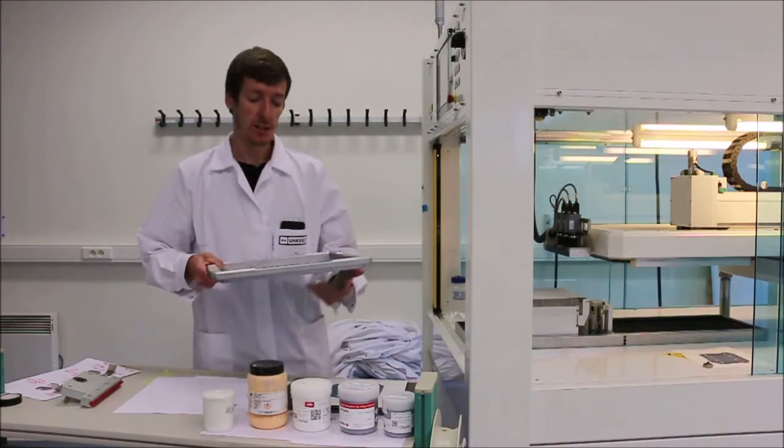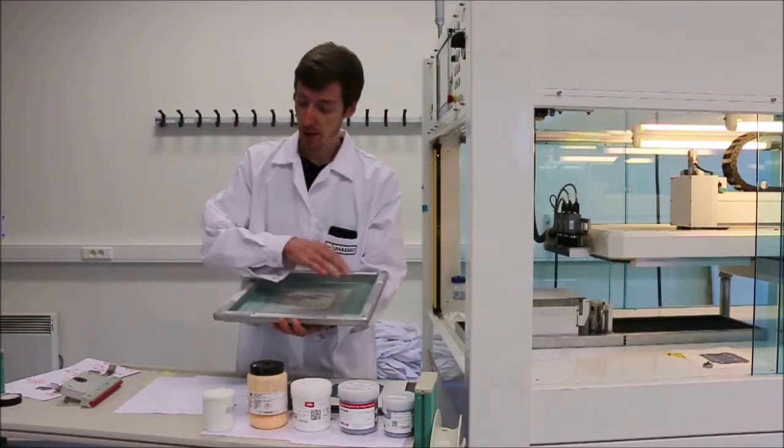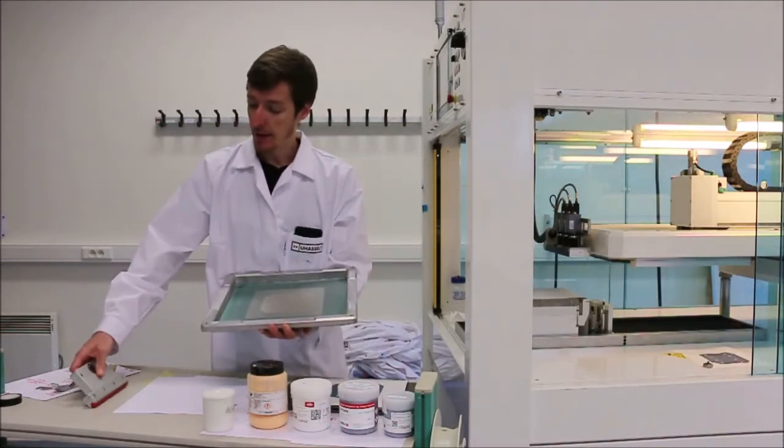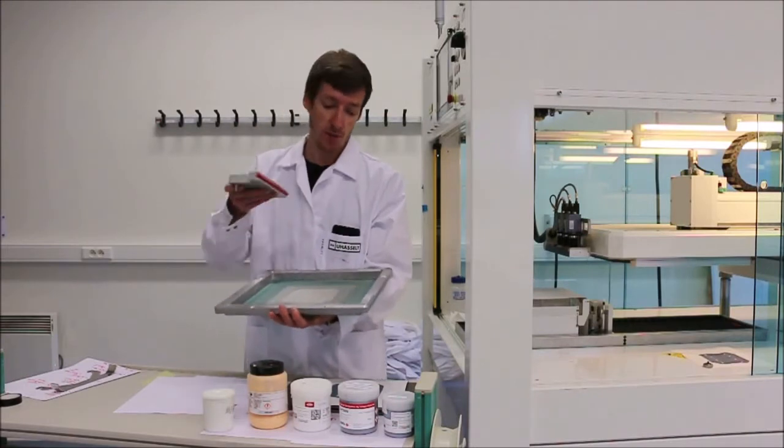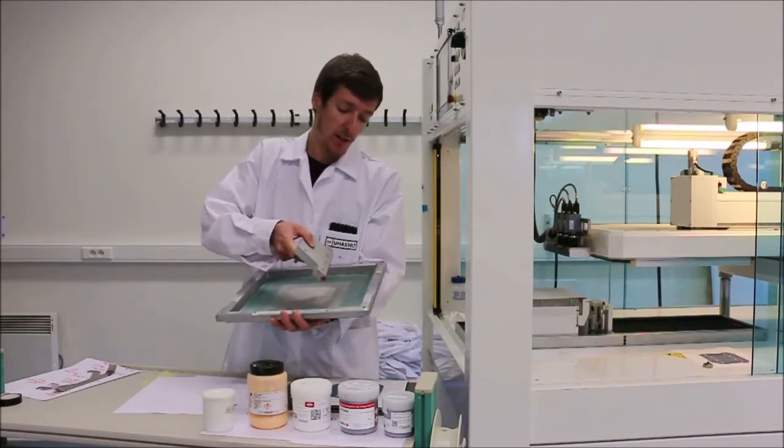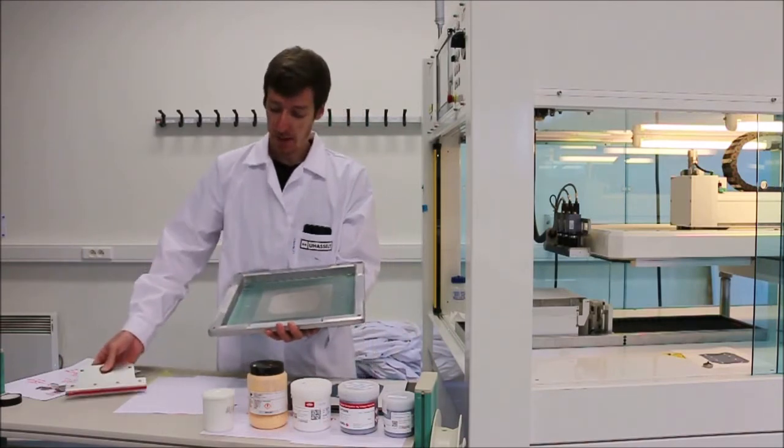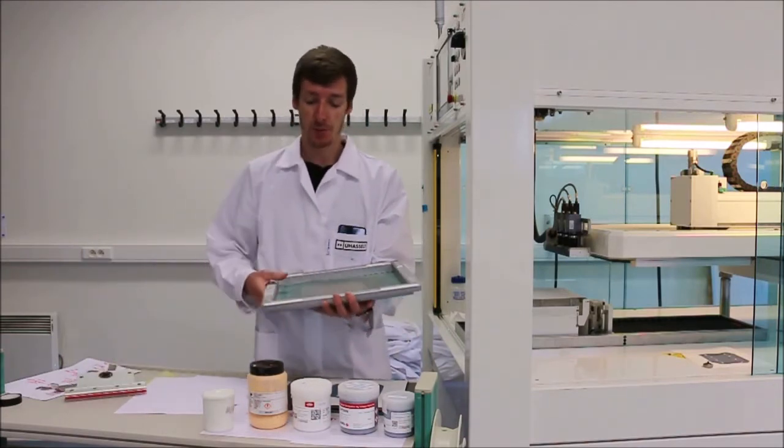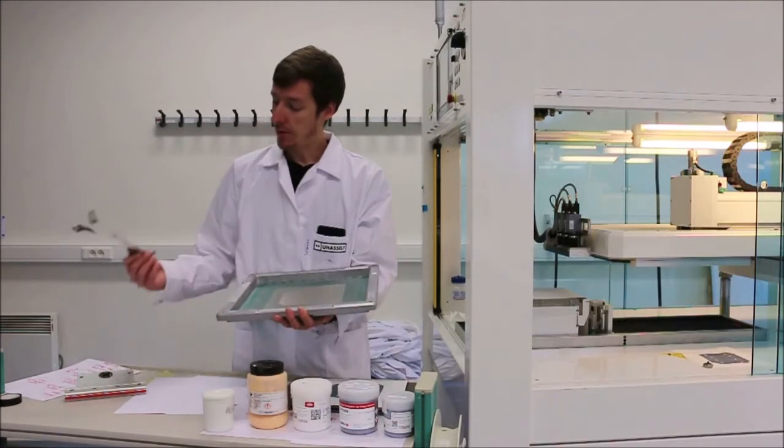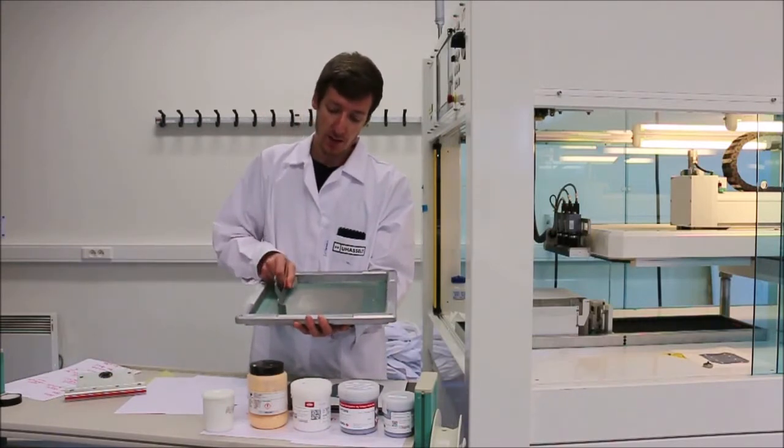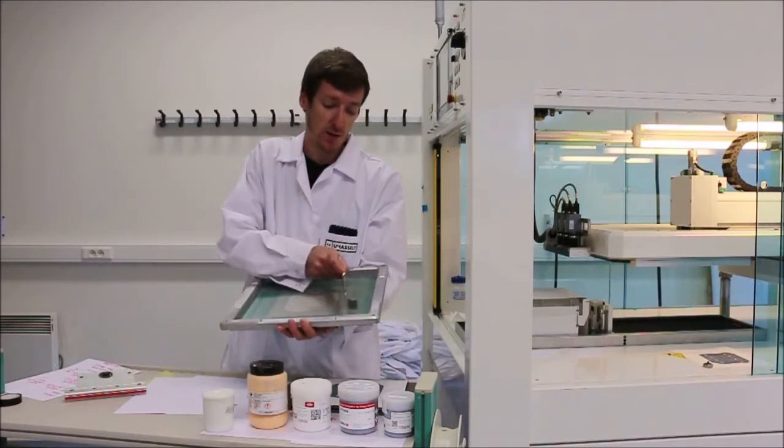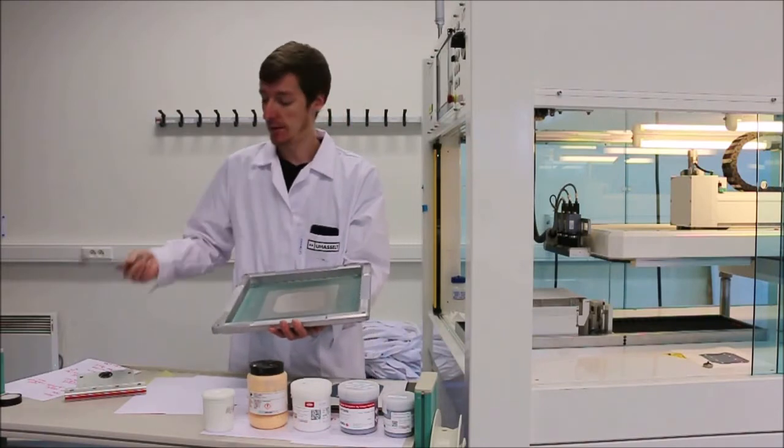With our screen placed in the machine, we can start to add our ink on top and then a rubber squeegee will start to press the ink in and through our mesh, leaving the pattern on our substrate. After that we have a metal blade which will retract the excess amount of ink back to its starting position so we can repeat the process.